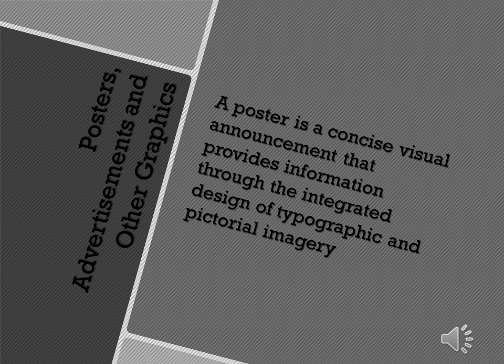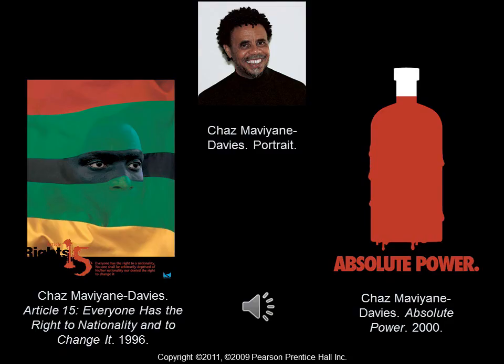Moving on to posters, advertisements, and graphics. A poster is a concise visual announcement providing information through the integrated design of typographic and pictorial imagery. Graphic designer Chaz Mavion Davies, known for the Global Warning poster, also designed posters dealing with social causes — including 'Article 15: Everyone Has the Right to Nationality and Change It,' based on the United Nations Universal Declaration of Human Rights.